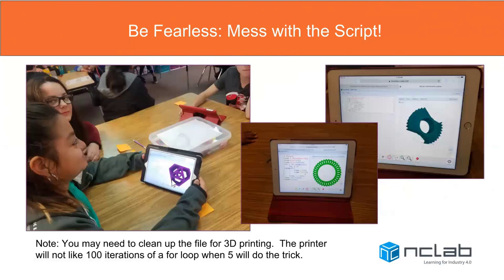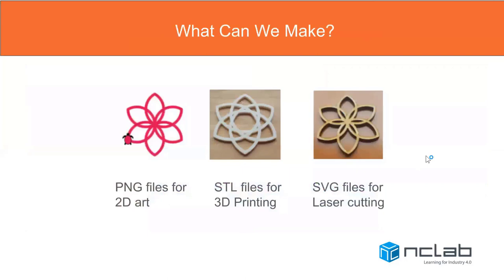There's one with three hexagons — the kids were excited because it's apparently related to some game. This one has a lot of repetitions with messing with the turn angles and came up with a really pretty pattern. One lost its symmetry but ended up as a sort of bow-tie object, which can be quite fun too. When they're playing with it, a word to the wise: you may need to clean up the file a little bit for 3D printing, since the printer won't like a hundred iterations of something when you should only have five.